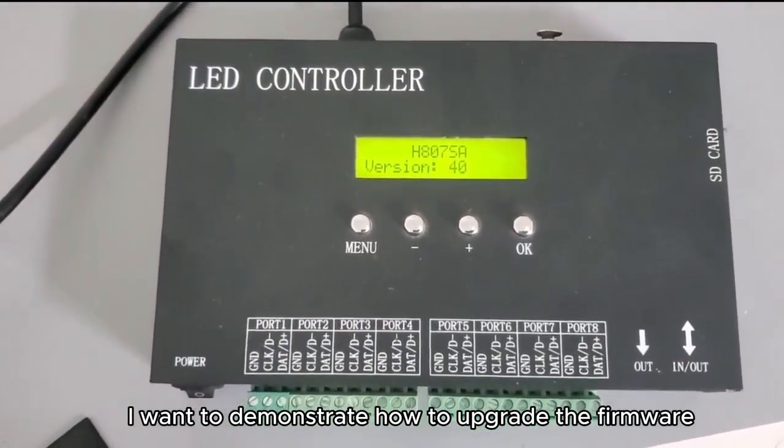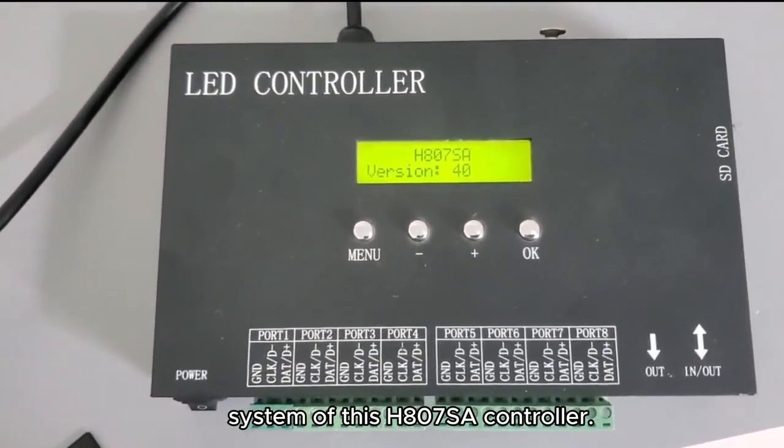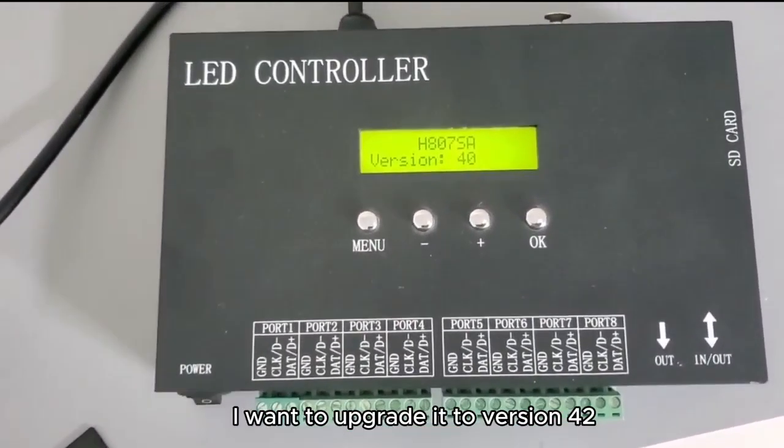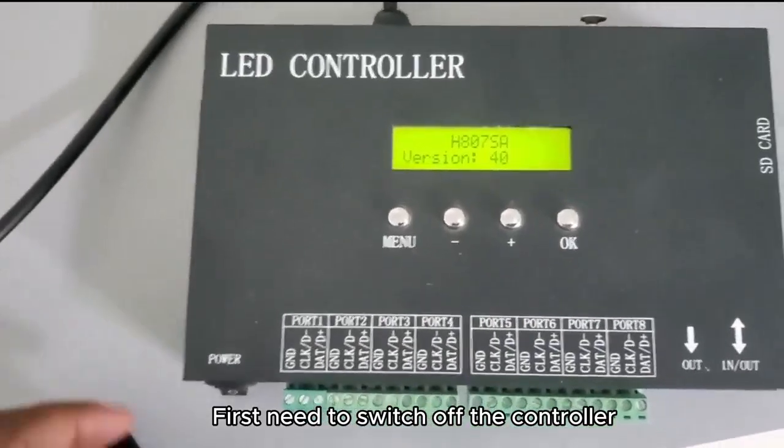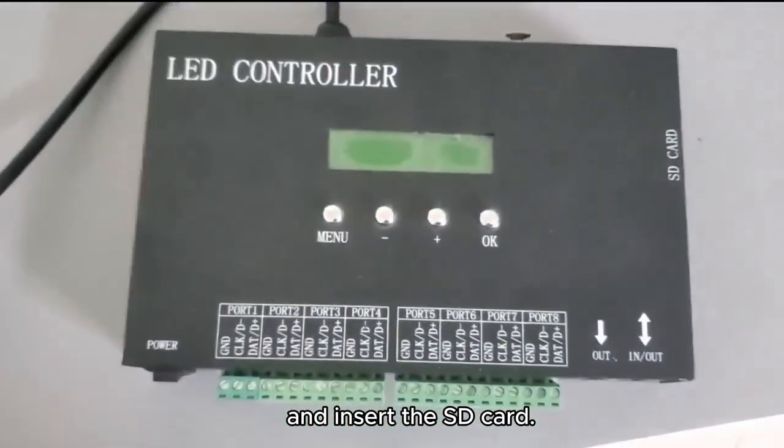I want to demonstrate how to upgrade the firmware system of this H8807 controller. I want to upgrade it to version 42, which is the latest one. First, you need to switch off the controller and insert the SD card.